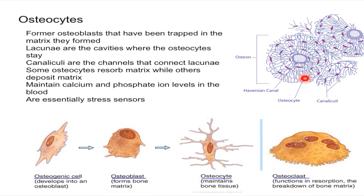In this diagram you can see the osteocytes are the red little things. These osteocytes stay in little cavities called lacunae. The little lines you see are canaliculi — small channels that connect the lacunae, or the cavities where osteocytes reside.